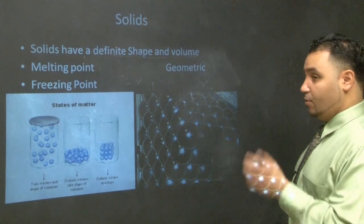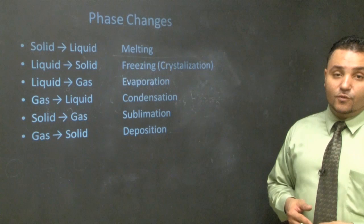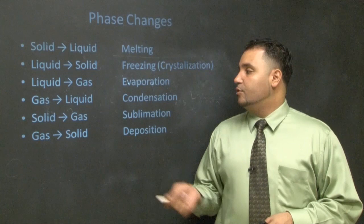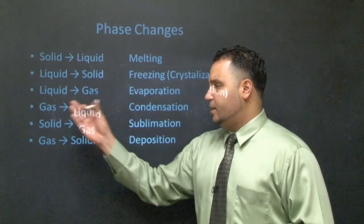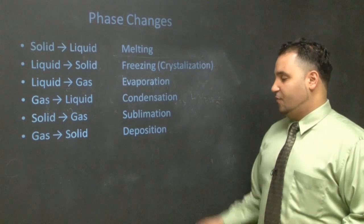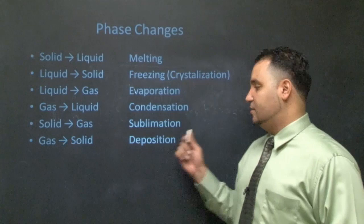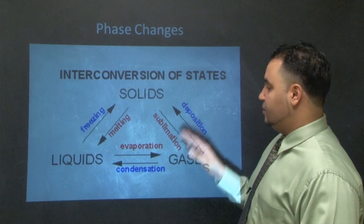Phase changes: solid to liquid is melting; liquid to solid is freezing; liquid to gas is evaporation; gas to liquid is condensation (like precipitation forming in clouds); solid to gas is sublimation; and gas to solid is deposition. Don't confuse sublimation and deposition — students frequently forget these two, so make sure you know them.